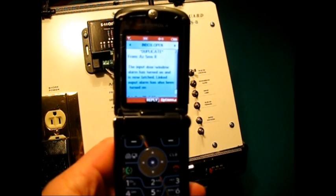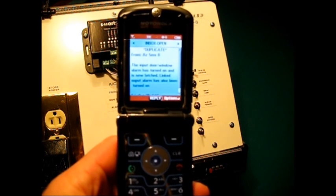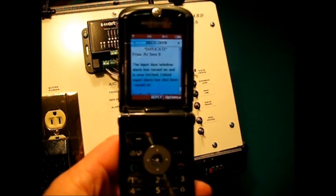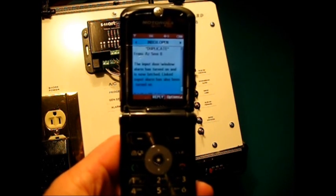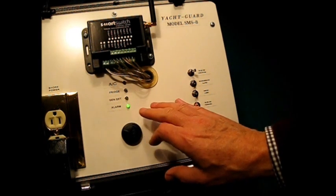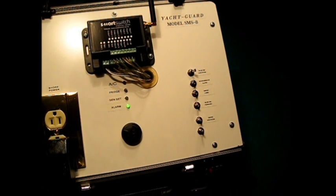In addition, I have received a warning that the input for the door window alarm has turned on and is now latched and the linked output on the alarm has also been turned on. After the marina operators or the police department have been contacted, you can reset this alarm through your cell phone and turn the alarm off, but it will stay on until you send a reset command, which means that your intruder will have a continual siren or flashing lights to deal with if he remains on board.